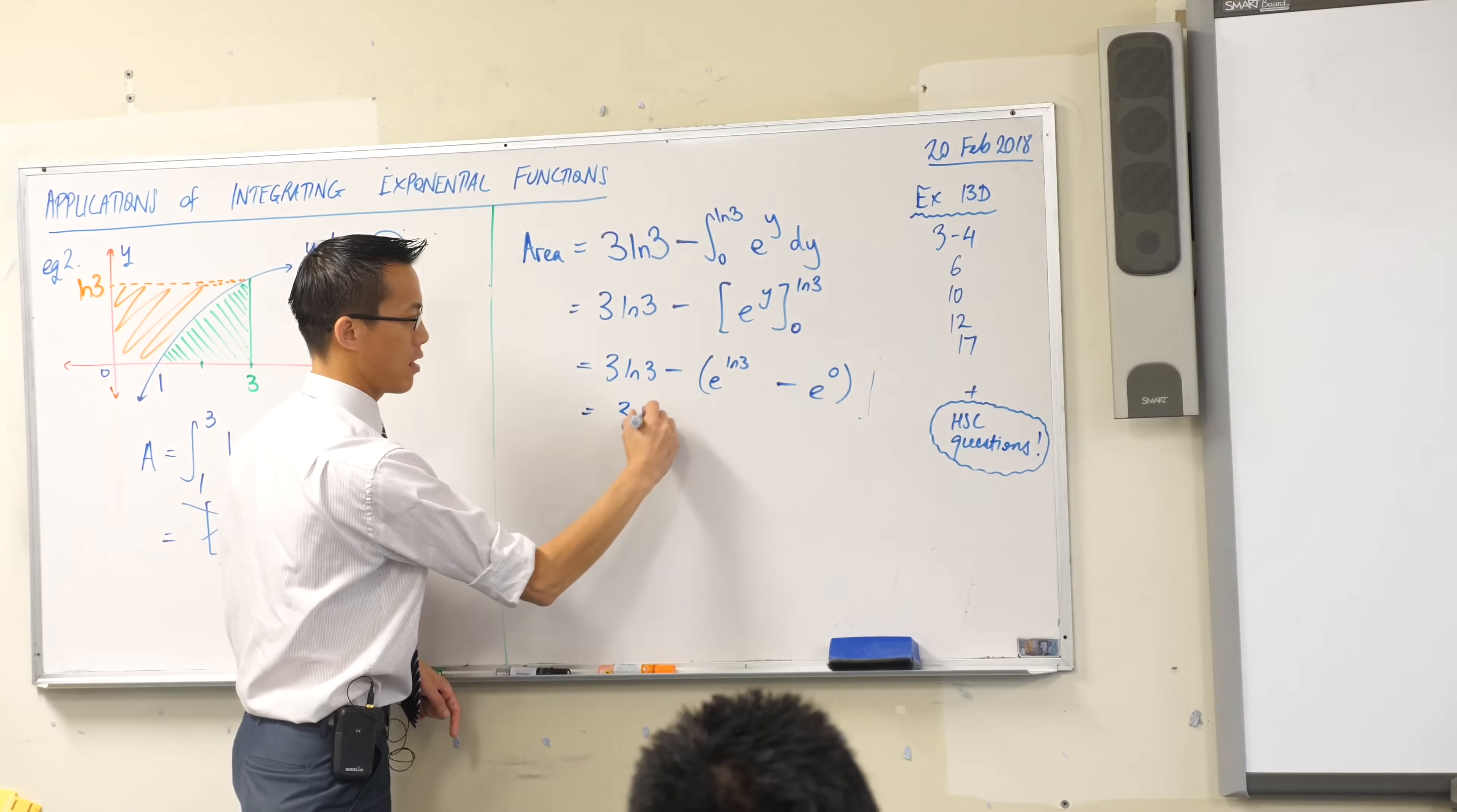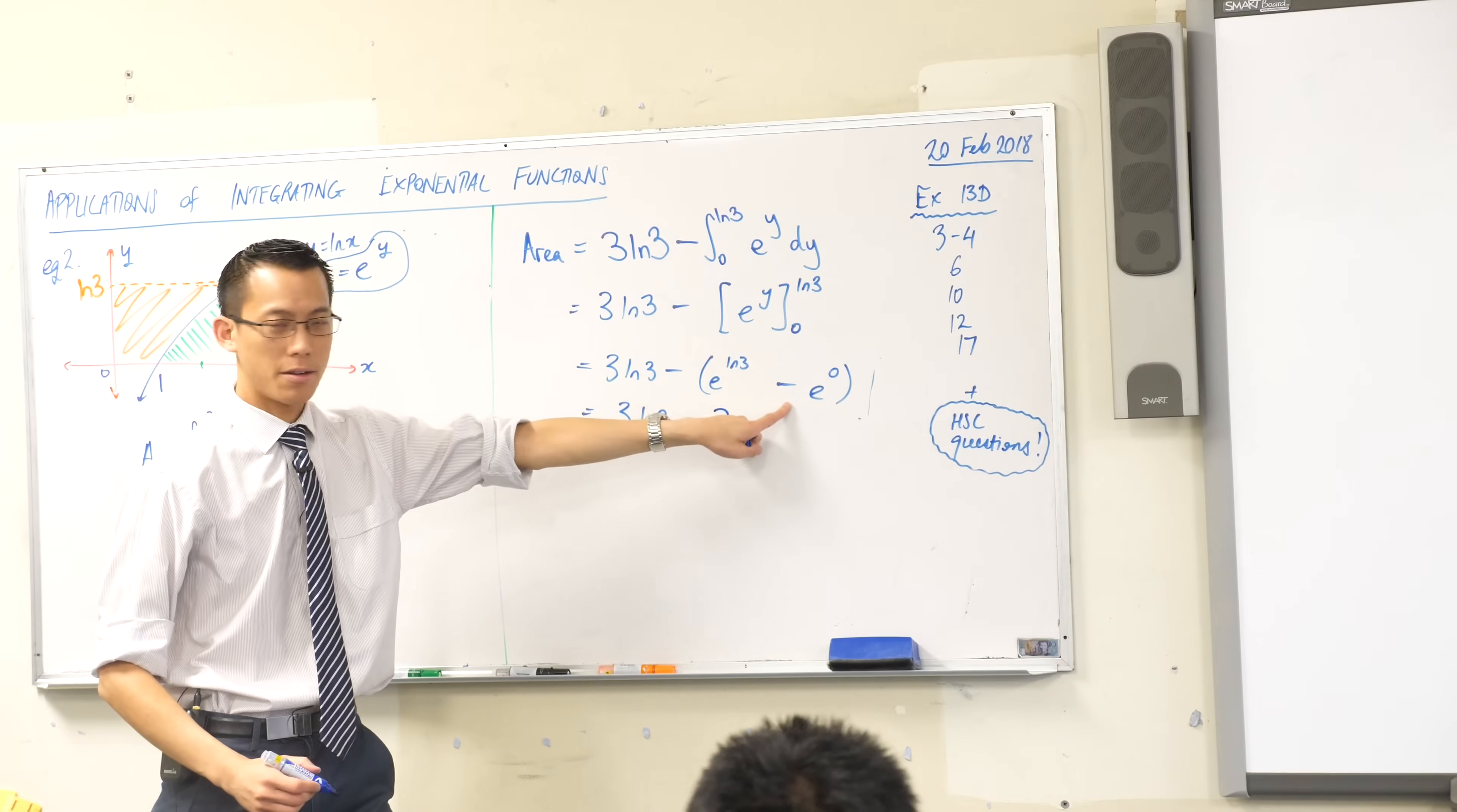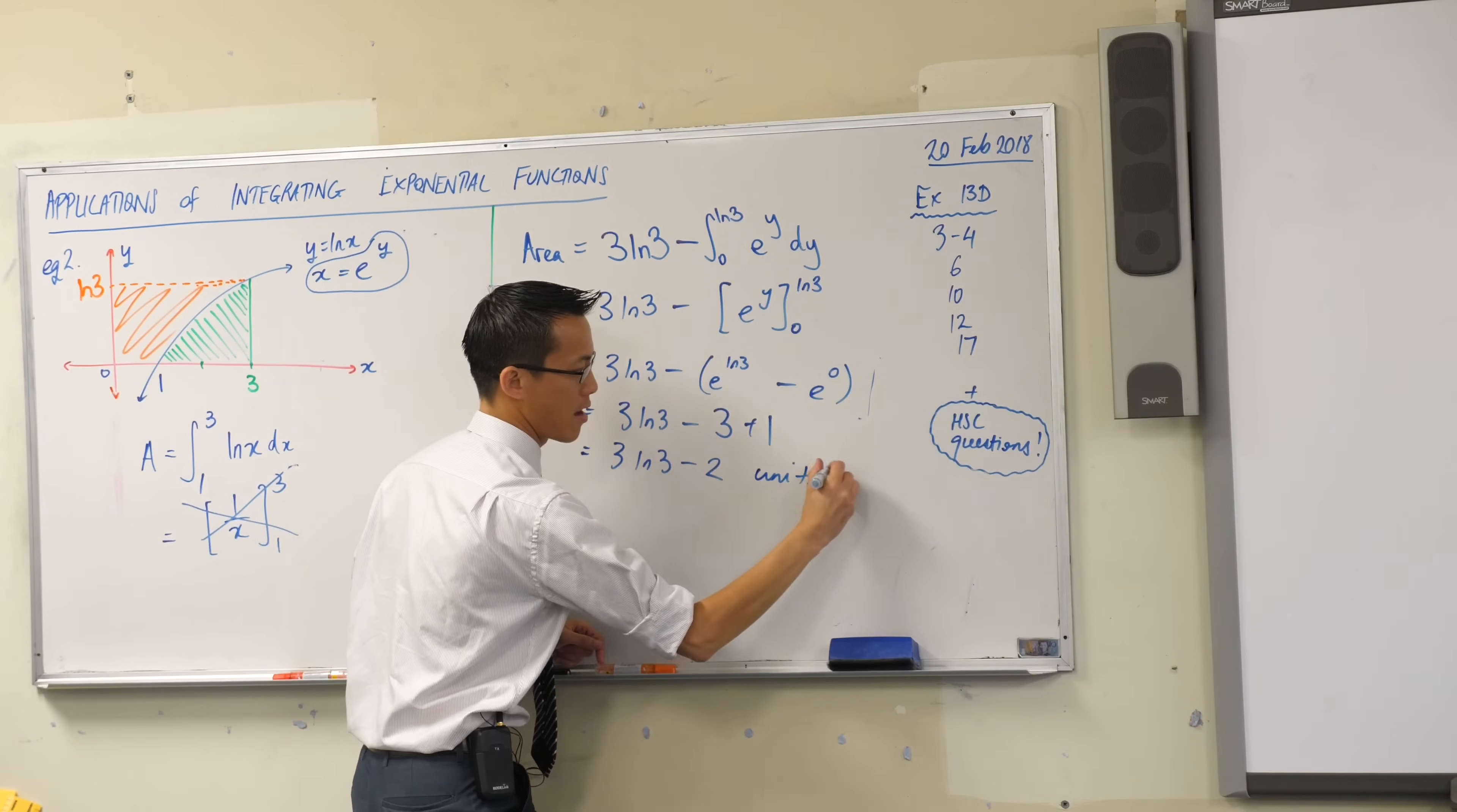3 log 3 take away what's e to the power of log 3, that's just 3. You see how important all those exponential and log laws, that we, index and log laws that we learned last year were? So that's just 3, done. What about this guy? This is 1. There's a double negative there. Here is my answer, almost. What's it missing? It's an area, so there is my area.